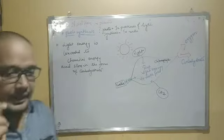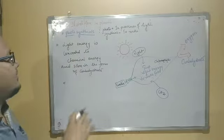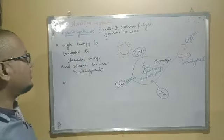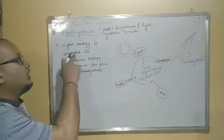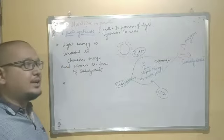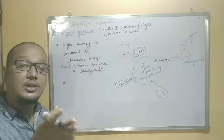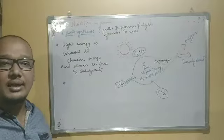Light energy is converted to chemical energy and stored as carbohydrate. But in order to convert this light energy, plants first need to trap it. The trapping of light is done by chlorophyll.